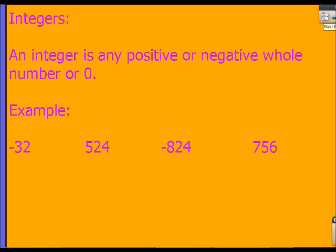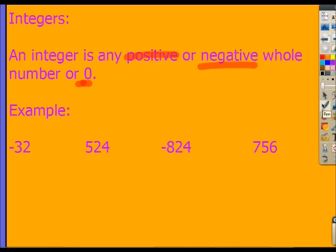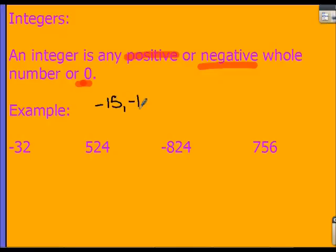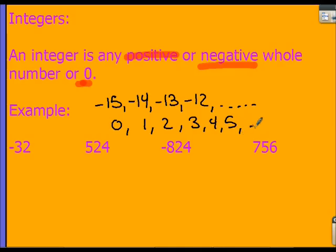The next set is integers. Integers are any positive or negative whole number, or zero — basically any number that doesn't have a decimal or a fraction. So we've got negative fifteen, negative fourteen, negative thirteen, negative twelve, and so on, then we hit zero, and then count up: one, two, three, four, five, and so on. Negative thirty-two is an integer because it's negative with no decimals or fractions. Five hundred twenty-four, negative eight hundred twenty-four, seven fifty-six — no decimals or fractions — all integers.